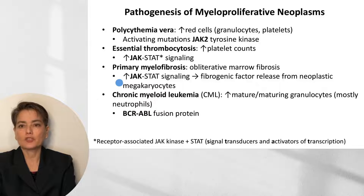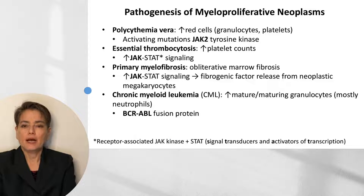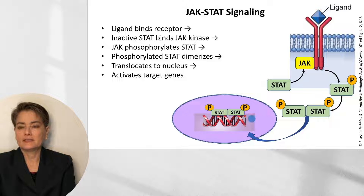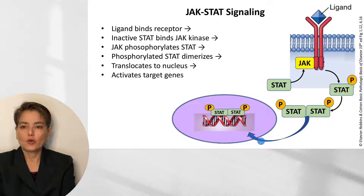JAK is a receptor-associated kinase and STAT stands for signal transducers and activators of transcription. When a ligand binds the receptor, STAT translocates from the cytoplasm to bind JAK, which phosphorylates it. Phosphorylated STAT dimerizes with another phosphorylated STAT, translocates to the nucleus, and activates target genes. This constitutively active signaling drives proliferation in polycythemia vera, essential thrombocytosis, and primary myelofibrosis. In myelofibrosis specifically, JAK-STAT signaling causes neoplastic megakaryocytes to release fibrogenic factors, leading to obliterative marrow fibrosis.